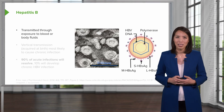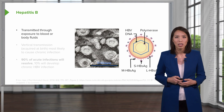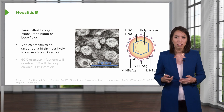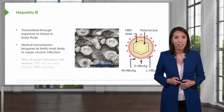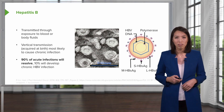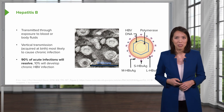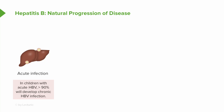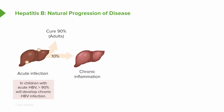Specifically regarding hepatitis B, it is transmitted from exposure to blood or body fluids from an infected person, and can also be transmitted vertically from mother to child. When acquired at birth, this is most likely to cause chronic infection. In most cases, about 90% of those who acquire an acute infection will resolve, and only 10% will go on to develop chronic hepatitis B. Note that in children who acquire hepatitis B from vertical transmission, over 90% will actually develop chronic hepatitis B.